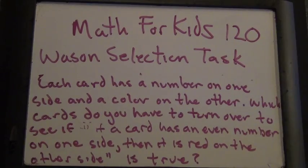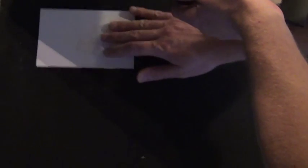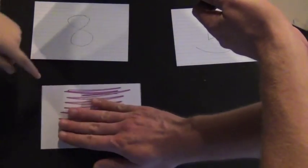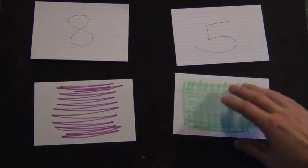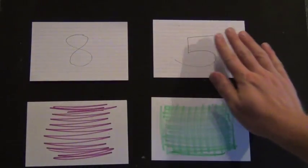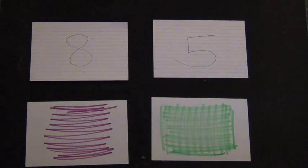We're trying to know if that statement is true or false. So let me explain it again. We're going to have four cards. You ready to see them? One is red and one is green. Let's see how they show up on the camera. Okay, so we have four cards, and we're trying to understand the statement: if a card has an even number on one side, then it is red on the other side. Do you understand the statement?